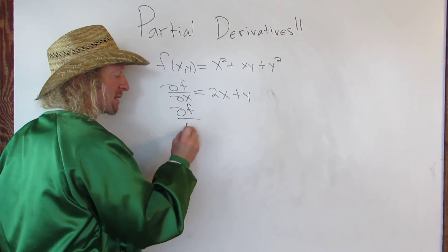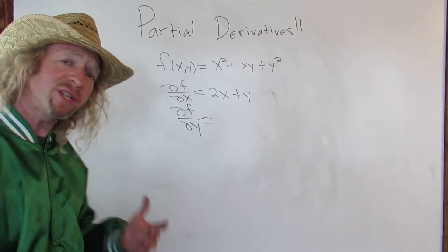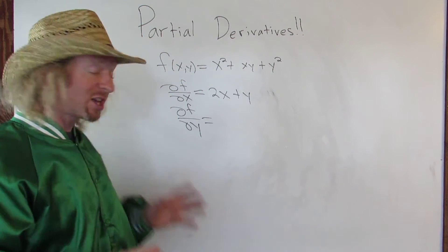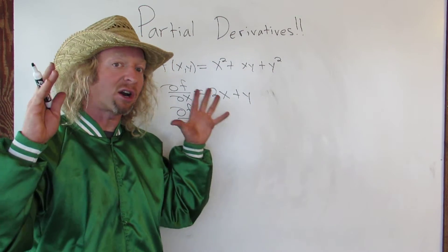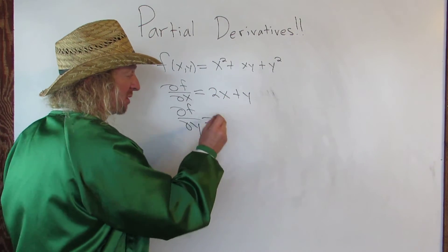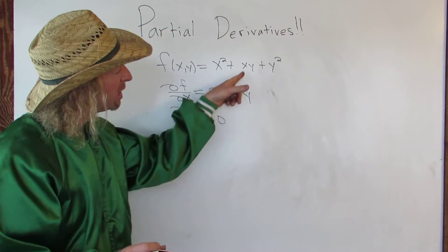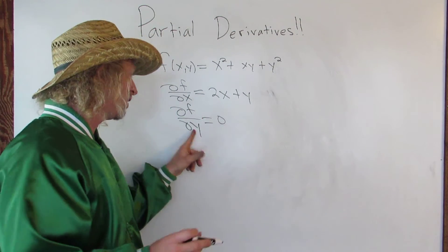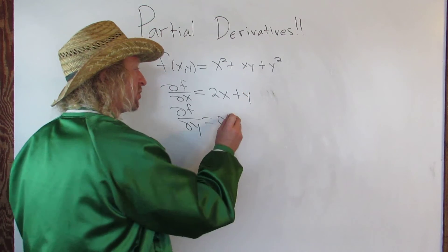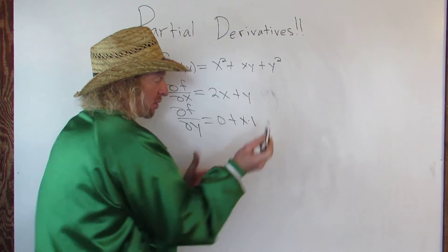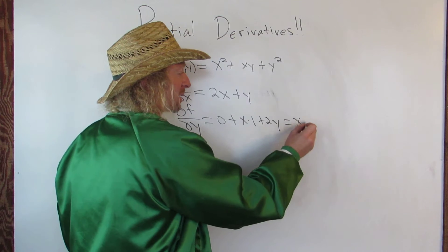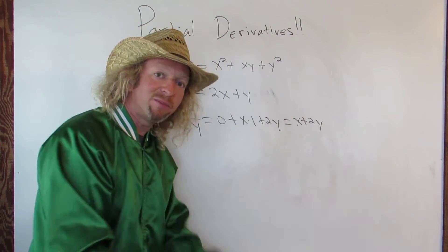Let's compute del f del y to see if it makes a little more sense. Now we're taking the partial derivative of f with respect to y. So in this case, all of the other variables are constant. The derivative of x squared will be zero. Here we're taking the derivative of x times y with respect to y, so the x hangs out and the derivative of y is one — so it's just plus x. And then the derivative of y squared is 2y. So in this case we get x plus 2y. And that's how you compute partial derivatives.